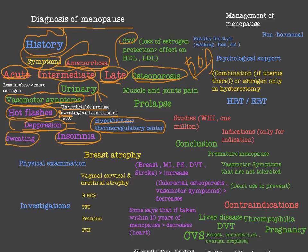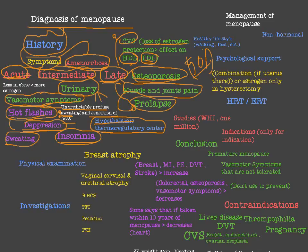Cardiovascular disease risk also increases after menopause, again due to loss of estrogen. Estrogen raises high-density lipoprotein (the good cholesterol) and lowers low-density lipoprotein, so its loss leads to CVS problems. Other late complications include muscle and joint pain, and pelvic organ prolapse due to muscle weakness.